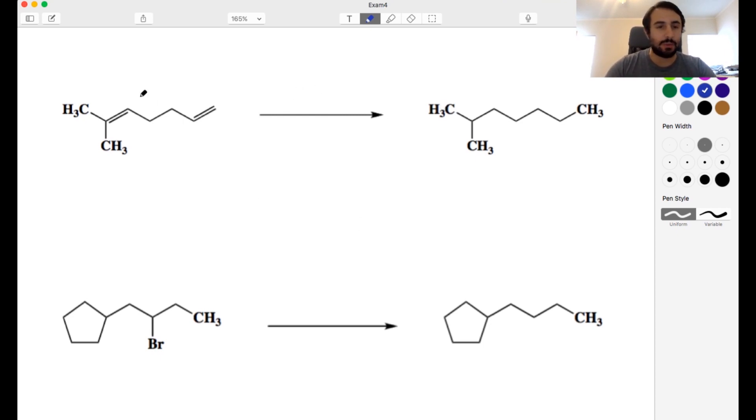So first this one's pretty simple. We've got this diene, we have two pi bonds there and we want to go to the alkane. So clearly we want to do some hydrogenation and as it happens this one we don't really have to think too much.